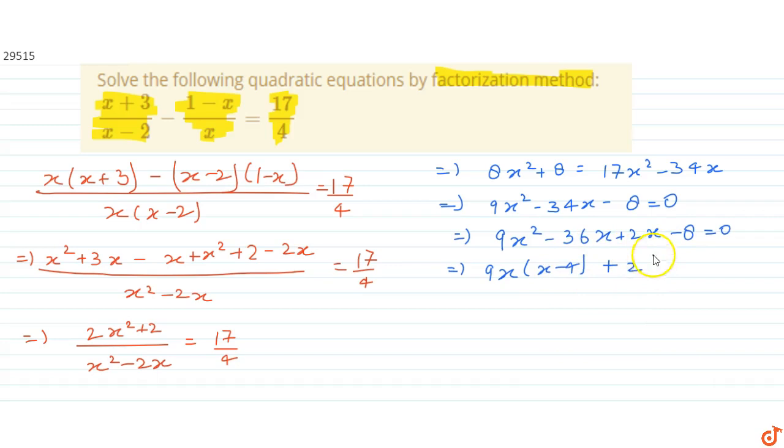This implies that (9x + 2)(x - 4) equals 0. This implies that either 9x + 2 equals 0 or x - 4 equals 0.